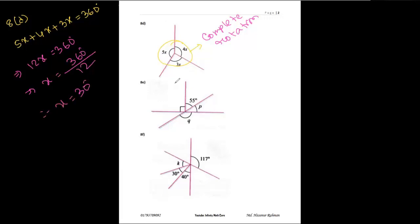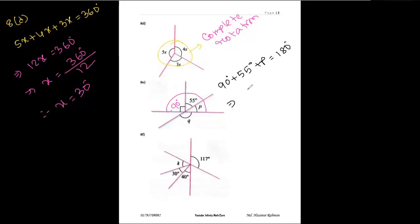Now for 8e, which is very simple. Looking at the figure, this angle is a square angle — a right angle — which is always 90 degrees. So these three angles will make a straight angle. For 8e, we write: 90 degrees plus 55 degrees plus p equals 180 degrees. Adding 90 and 55 gives 145, so 145 degrees plus p equals 180 degrees.